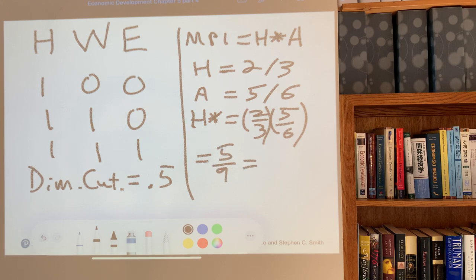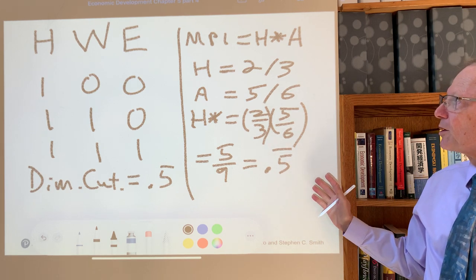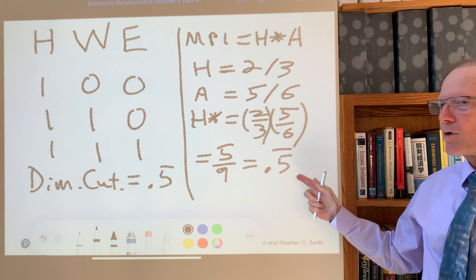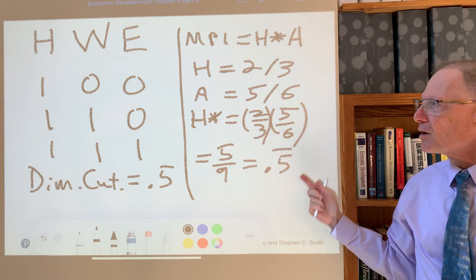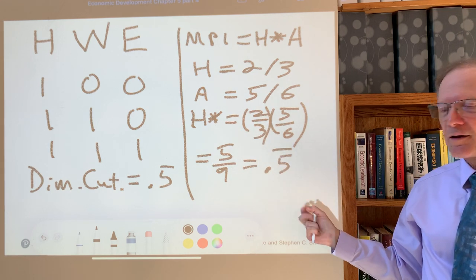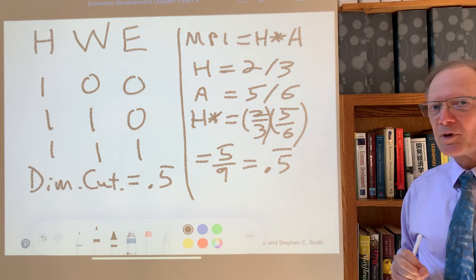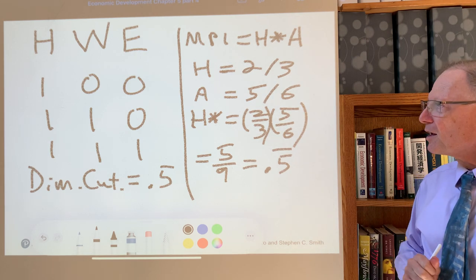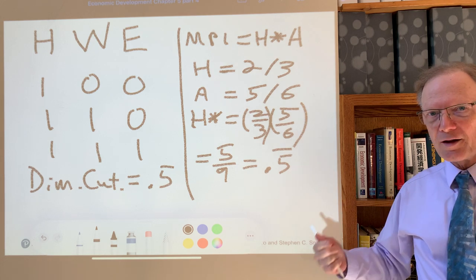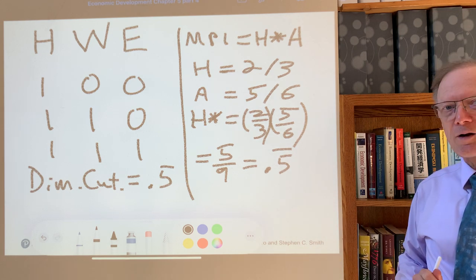Therefore MPI = H × A = 2/3 × 5/6 = 5/9, or approximately 0.5555. This is a very high number — it would rate among the most poor countries in the world. This gives a simple illustration of how to calculate the MPI and understand its underlying assumptions. There's a similar exercise with four dimensions and five people in the exercise set, and you can try different numbers to make sure it all makes sense.